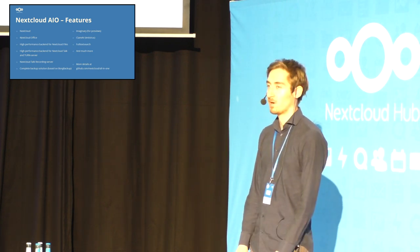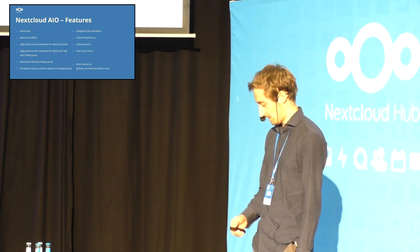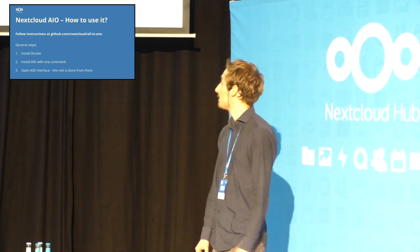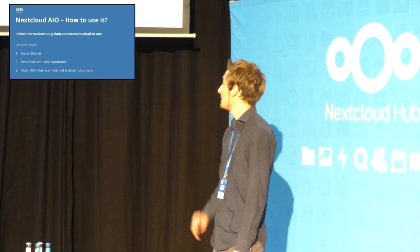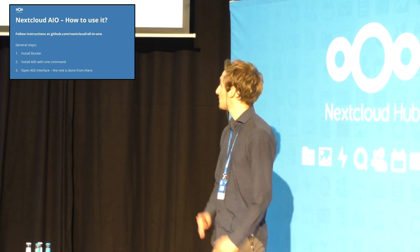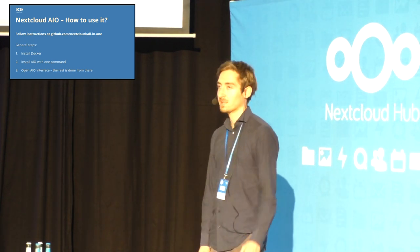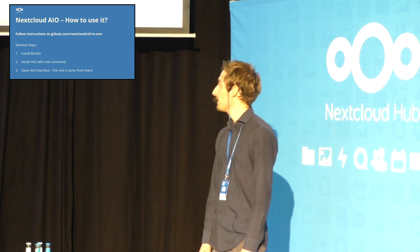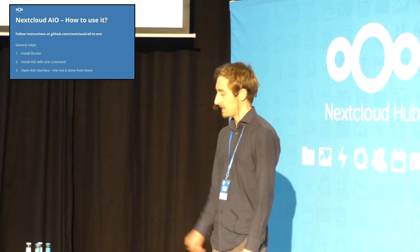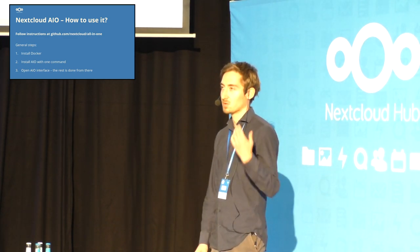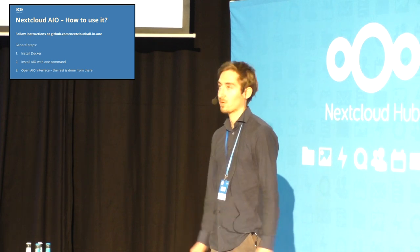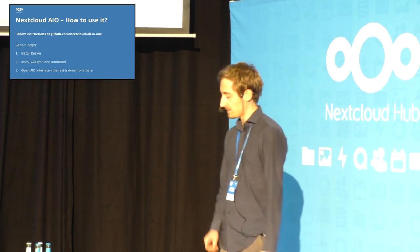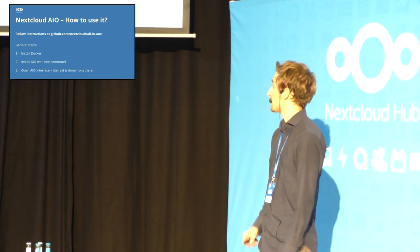More details can be found at github.com/nextcloud/all-in-one. The main advice from my side would be to visit that page. The general steps would be to install Docker first, then install All-in-One with one command mentioned in the readme, and then open the web interface — the rest is done from there.